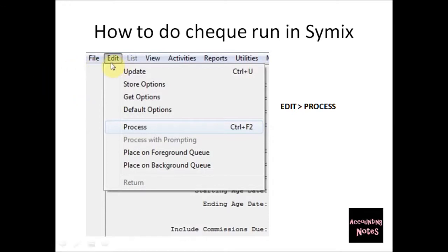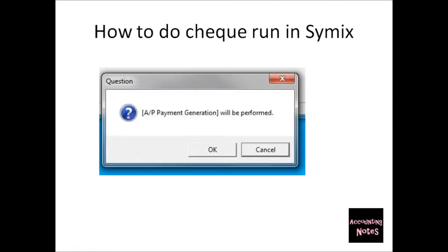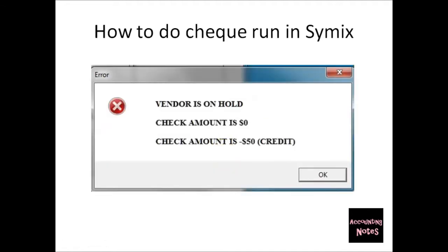When you have everything entered, the next step is to go to Edit on the toolbar and click Process. You will see a pop-up which says Accounts Payable Payment Generation will be performed — click OK.